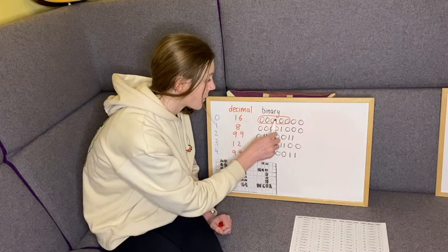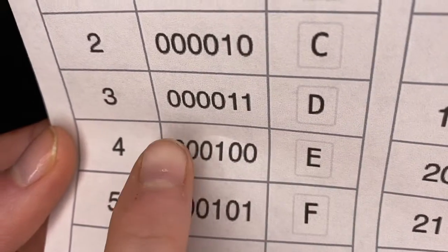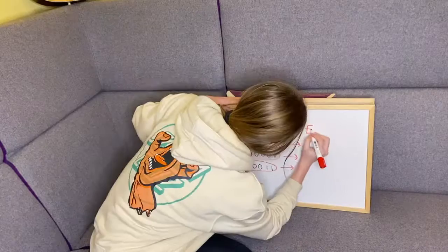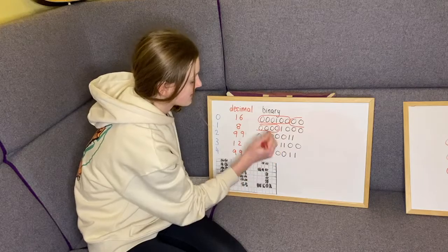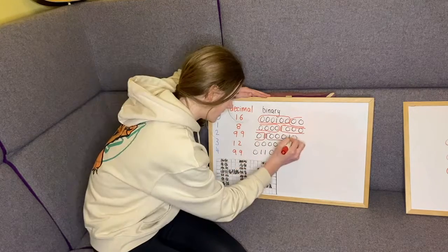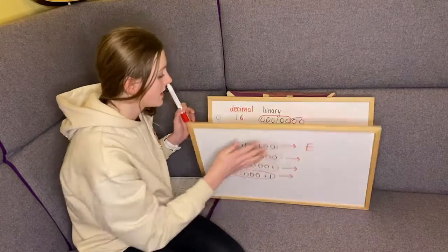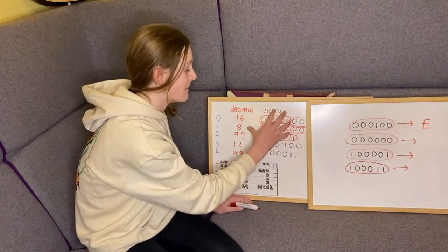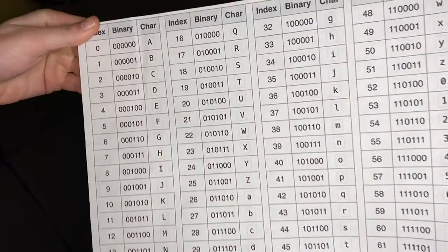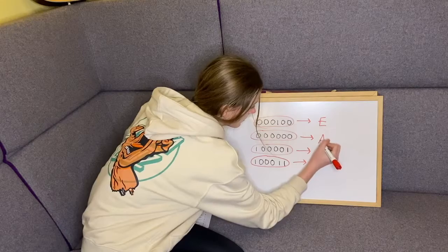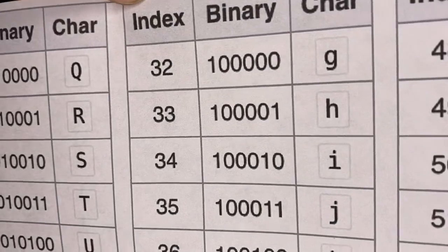The first six-bit number is 000100 — looking at our chart, its base64 equivalent is capital E. The next set of six digits, then the next, and so on. The second six-bit number is six zeros — on the table, right at the top, that's capital A. The next one is 1000001 — on our chart, that's lowercase h.